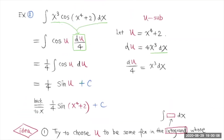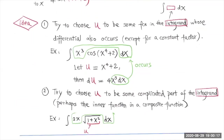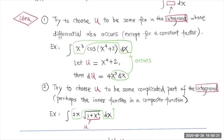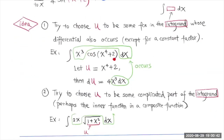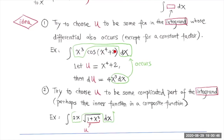You might wonder how to know which expression to choose for u. There are some ideas. Number one: try to choose u to be some function in the integrand whose differential also occurs. For example, we chose u to be x⁴ + 2, so the differential du has x³ dx, which also happens to appear in this integral. So you know you've made the right choice.